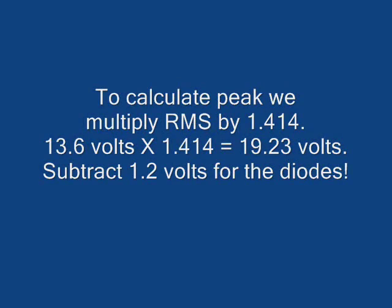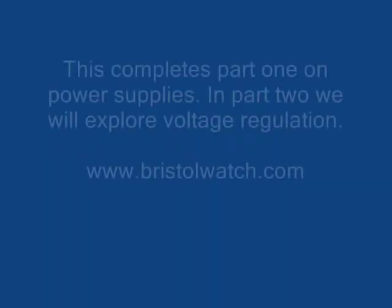To calculate peak, we multiply RMS by 1.414. 13.6 volts times 1.414 equals 19.23 volts. After subtracting 1.2 volts for the diodes, I measured exactly 17.35 volts.